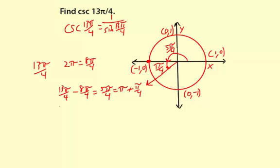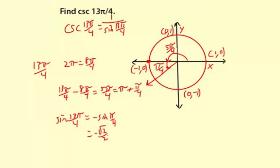Based on that reference angle and the fact that it's located in the third quadrant, the sine of 13π over 4 is going to be the negative sine of π over 4. And the sine of π over 4 is √2 over 2. So that means we're going to be negative √2 over 2. That's the sine of 13π over 4.